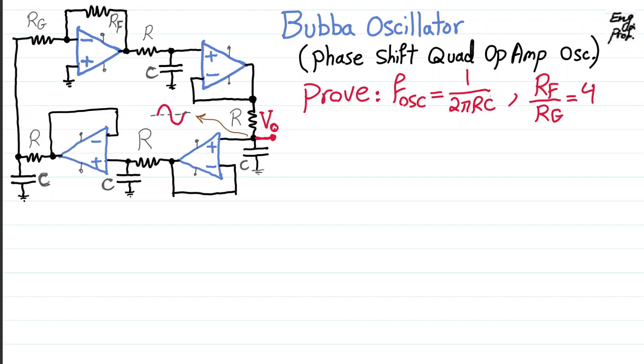We want to prove that the frequency of oscillation, if we have a stable oscillation, is 1 over 2πRC. And at the same time, we want to also investigate and see that R_F, which is the feedback resistor in the gain stage, divided by R_G, should be equal to 4. Basically, the required gain in this circuit needs to be 4. So that's what we are trying to do.